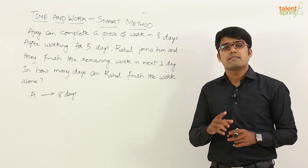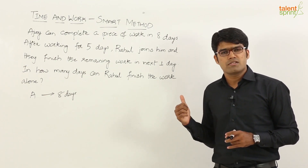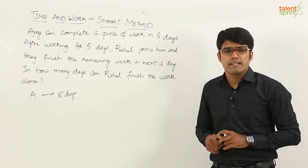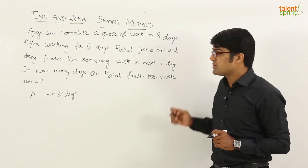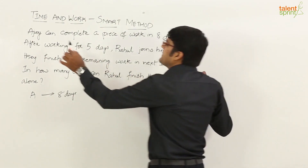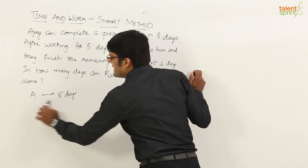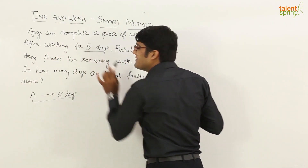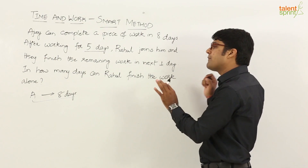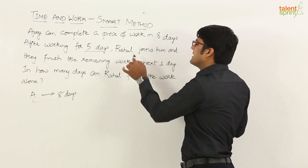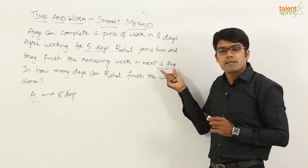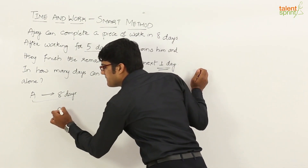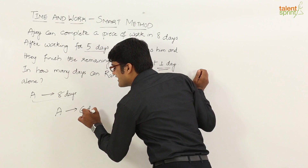But instead of doing all that, you can get the answer mentally without having to write anything on paper. The key insight is that Ajay can finish the total work in eight days, and if you look at the real situation, he has worked for five days alone and then worked along with Rahul for one more day. So altogether, the effort put in by Ajay is six days.